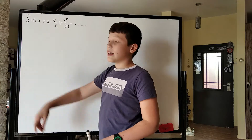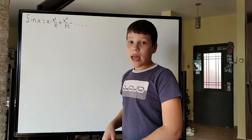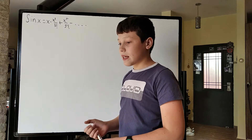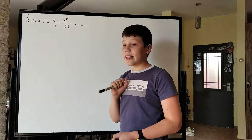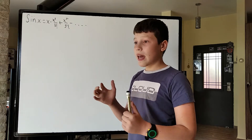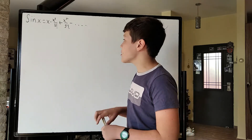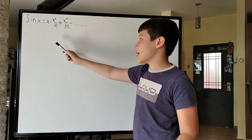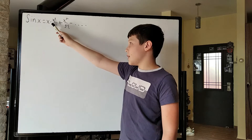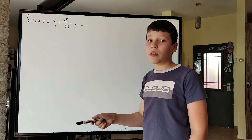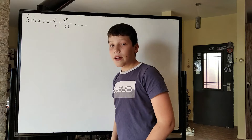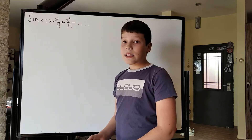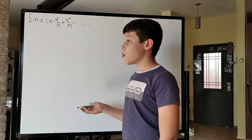What Euler did was also derive an infinite product for sine x. Then look at the x cubed term after taking out that product — since those functions are the same sine x, the x cubed coefficient, negative 1 over 3 factorial, will have to be the same after taking out the product. So let's derive the product formula.